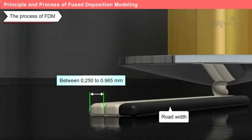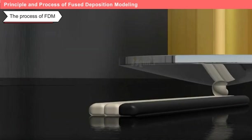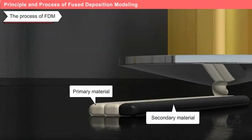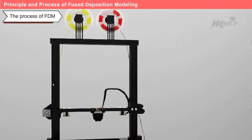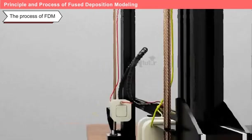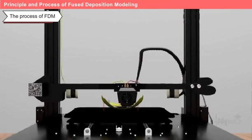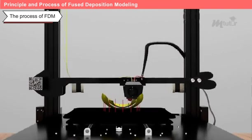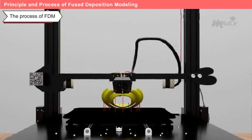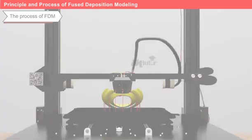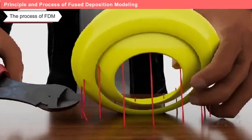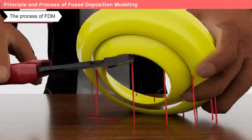FDM allows us to use two types of materials: a primary modeling material for creating the model geometry, and a secondary material, or release material, for building the support structures. Depending on the shape of the object to be manufactured, it is necessary to consider building supports while the piece is built. The air surrounding the head is maintained at a temperature below the material's melting point, and the exiting material quickly solidifies. The release material bonds with the primary material and can be washed away once the 3D model is complete.